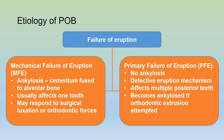There are two types of failure of eruption. Mechanical failure of eruption involves ankylosis where the cementum is fused to the alveolar bone. Usually this affects only one tooth and it may respond to surgical luxation or orthodontic forces. The other type is primary failure of eruption, where there is no evidence of ankylosis and the failure is due to a defective eruption mechanism. Primary failure of eruption usually affects multiple posterior teeth, and in these situations orthodontic forces cannot be used to extrude the teeth because doing so causes ankylosis.